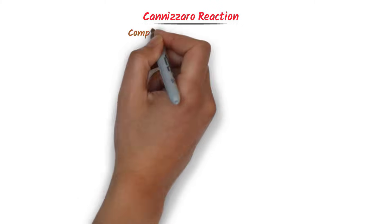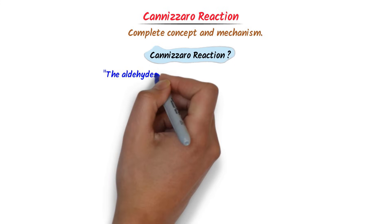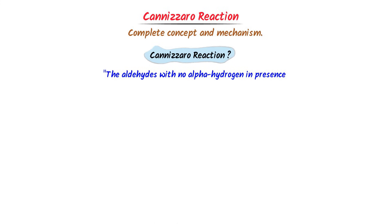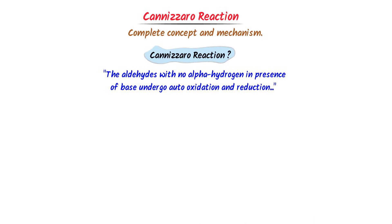Cannizzaro Reaction. I will teach you the complete concept and mechanism of Cannizzaro reaction. Firstly, let me teach you what is Cannizzaro reaction. The aldehydes with no alpha hydrogen, in presence of base, undergo auto-oxidation and reduction to form salt of carboxylic acid and alcohol. This reaction is called Cannizzaro reaction.